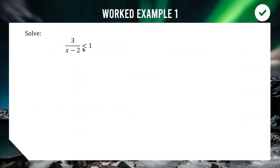Our first example is 3/(x − 2) < 1. If this were an equation it'd be straightforward — just multiply across by (x − 2). The problem is we can't do that here because we don't know whether (x − 2) is positive or negative, so we don't know whether the inequality sign should flip. We need to find the critical values of this function and do some intelligent testing.